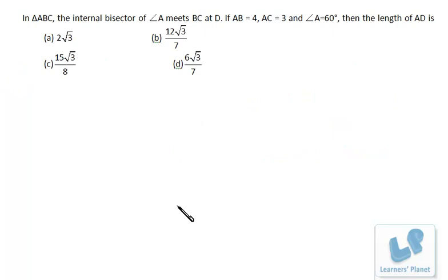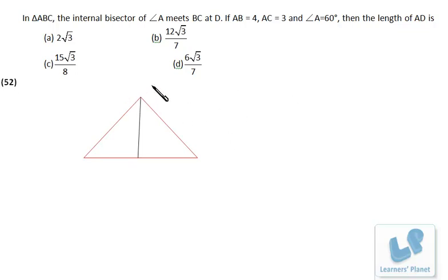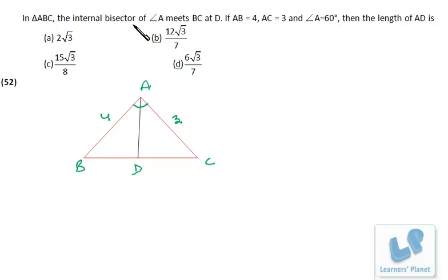Now let's see this problem. In triangle ABC, the internal bisector of angle A meets BC at D. If AB = 4, AC = 3, and angle A = 60 degrees, then find the length of AD. Let me draw the diagram. This is vertex A, B, and C, and this is D. AB = 4, AC = 3, angle A = 60 degrees. The internal bisector of angle A meets BC at D, so AD bisects angle BAC.